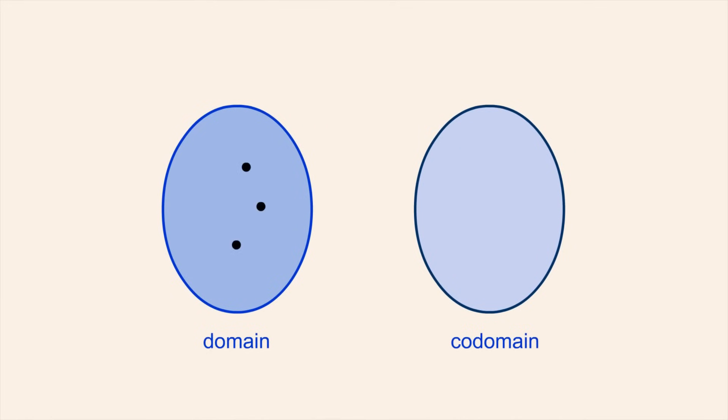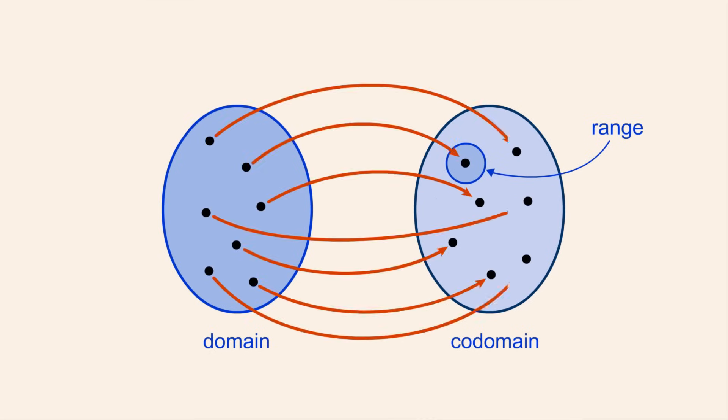So a function is a rule that associates each element in its domain to exactly one element in its co-domain. There can be additional elements in the co-domain which are not associated with any element in the domain, but the subset of elements which are associated is the range of the function. The range can be as small as a single element or could include every element of the co-domain.